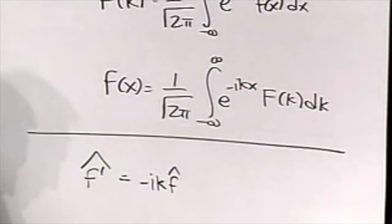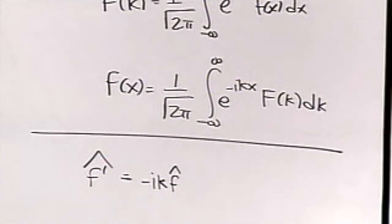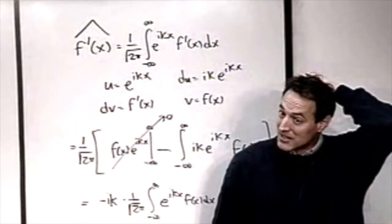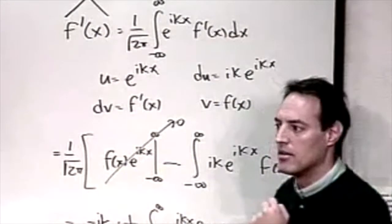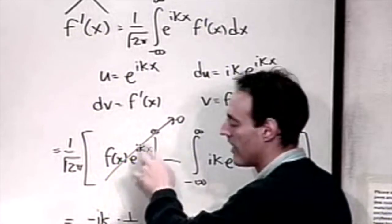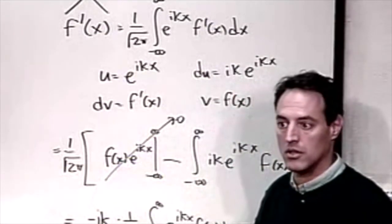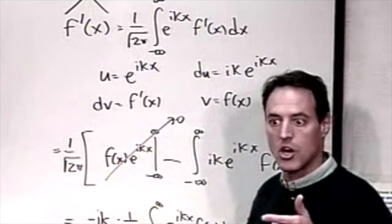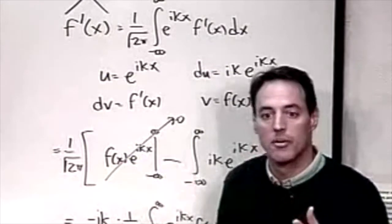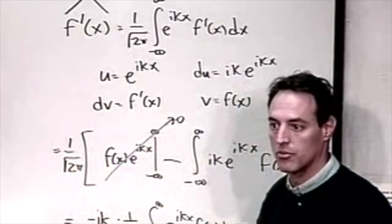On a finite domain from -L to L, for this boundary condition to hold we need the function to be periodic on the interval, so that the edge terms cancel. This is why Fourier transform methods essentially assume periodic boundary conditions — we're choosing k values so that e^(ikx) is periodic on the interval.